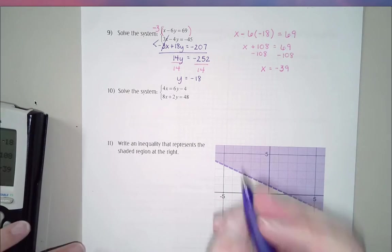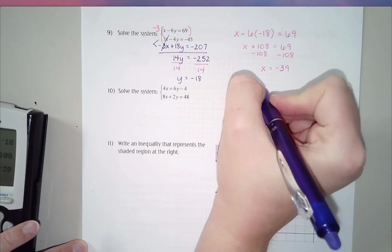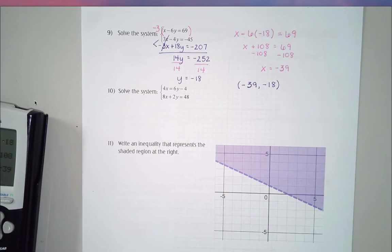This is like a negative 6 times negative 18, which is 108. So x plus 108 equals 69. If I subtract that 108 from each side, I end up with x equals negative 39. So as a final answer here, when I go to write this as a coordinate, I'm going to say negative 39 comma negative 18.